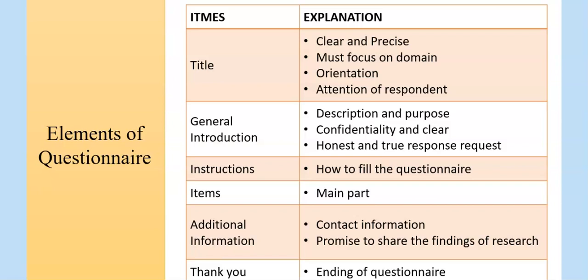This slide shows the different elements of a questionnaire. The very first element is the title, which should be clear and precise so that the respondent does not face any difficulty understanding the objective of the questionnaire. Number two: it must focus on the domain, meaning questions should be developed as per your requirement, and all sub-questions should lead towards the main question. There should be orientation explaining how to fill it, what the purpose is, and what results are forecasted. It should be written to capture the attention of the respondent.